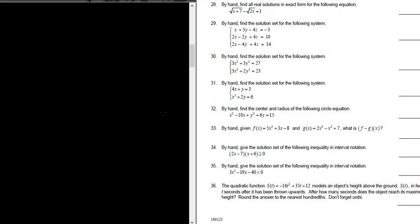Number 34. By hand, give the solution set of the following inequality in interval notation. So we have (2x - 7)(x + 6) greater than or equal to 0. So we have to solve this inequality. The first step when you're solving inequalities is to make sure you have 0 on one side and make sure that this is factored. So that's already done for us.